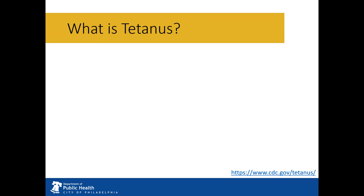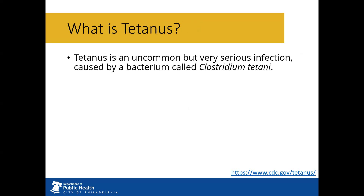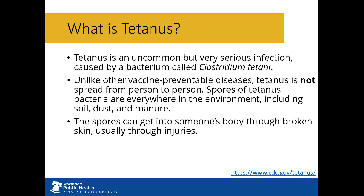What is tetanus? Tetanus is the T in DTaP and Tdap and is an uncommon but very serious bacterial infection. Unlike other vaccine-preventable diseases, tetanus is not spread from person to person. Spores of tetanus bacteria are everywhere in the environment, including soil, dust, and manure. The spores can get into someone's body through broken skin, usually through injuries — did everyone's parents warn them about stepping on rusty nails?